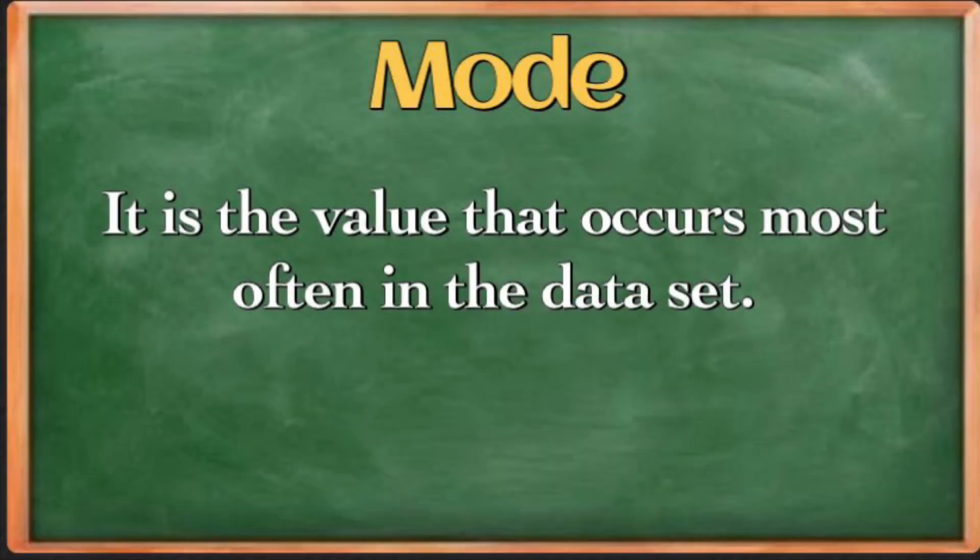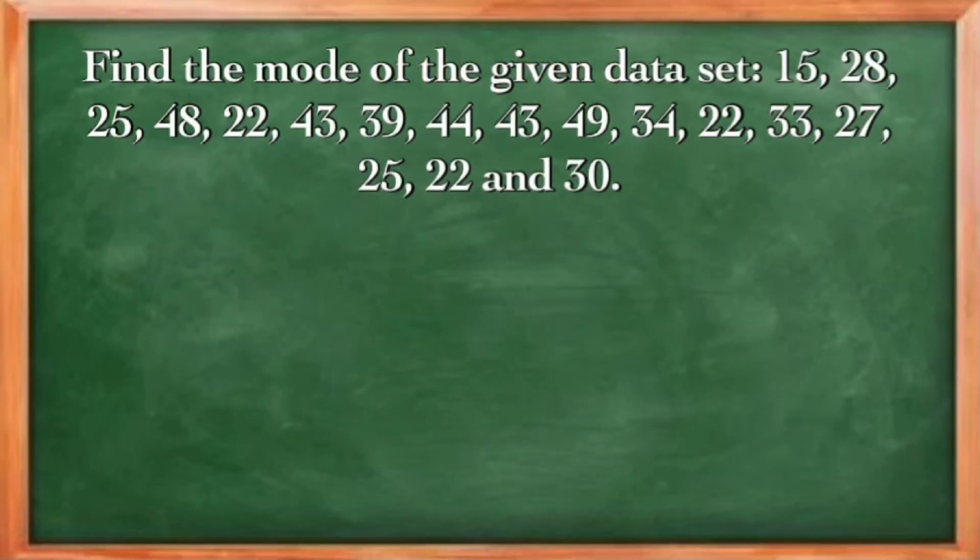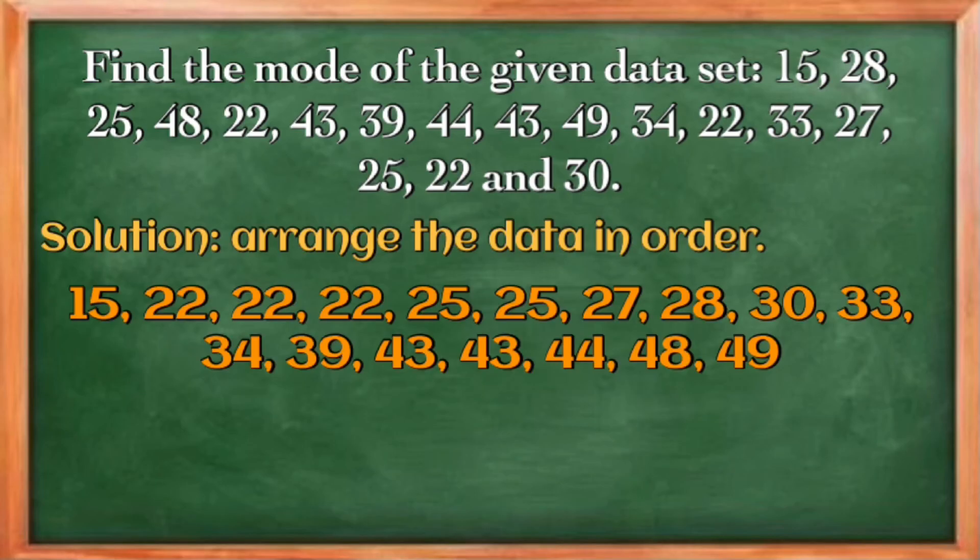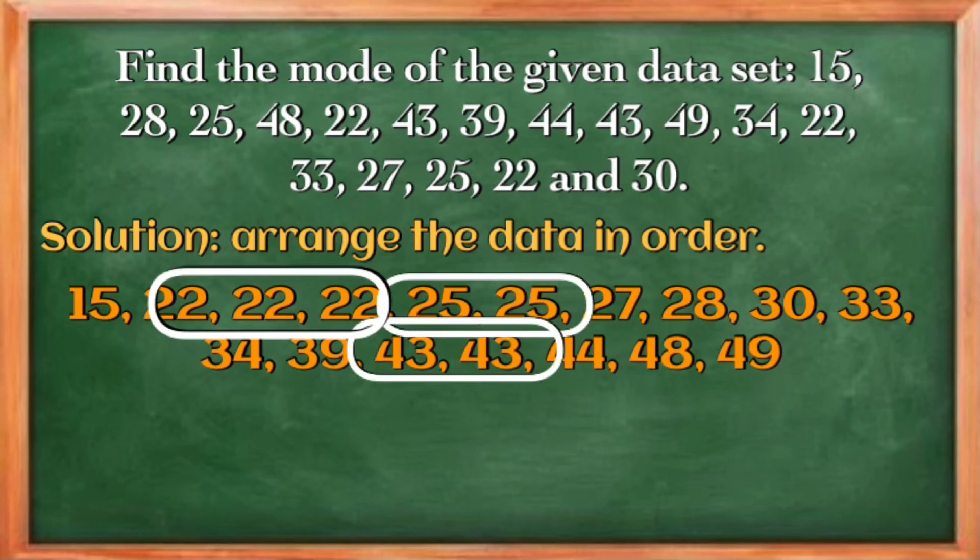Now, if you want to identify the most frequent data in the data set, you can use the mode. Mode is the value that occurs most often in the data set. Let us try to have this example. We're going to find the mode of the given data. Given here the data, same with the median, we need to arrange the set in order, and by identifying the frequency for each of the data, we can identify now the most frequent data.